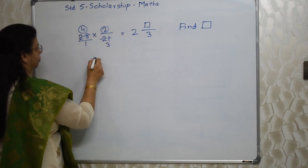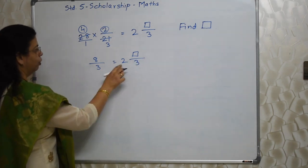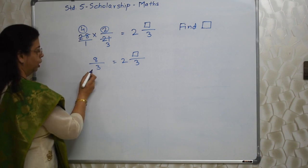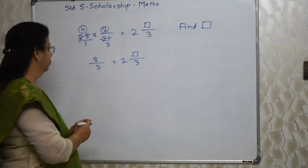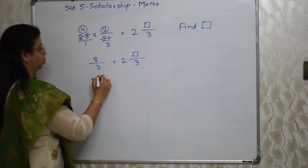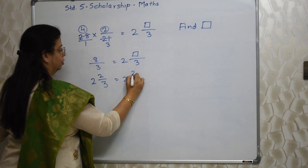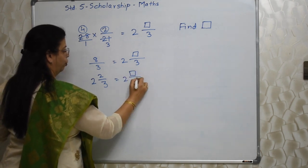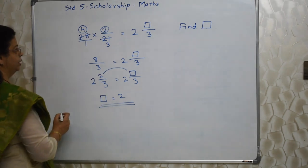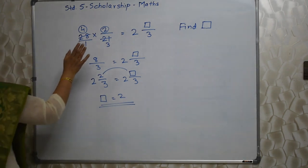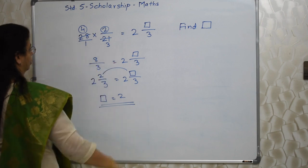So it is 4 into 28 upon 3, which is equal to 2-box upon 3. Now let's convert this into mixed form, because the answer is in mixed form — this is improper, so let's convert it. When we do the conversion, it is 2 and 2 upon 3. This is box upon 3, so obviously box is equal to 2. Very, very easy and interesting sum. You need to be very careful right in the beginning — this is not a mixed fraction, this is a multiplication of an integer with a proper fraction.